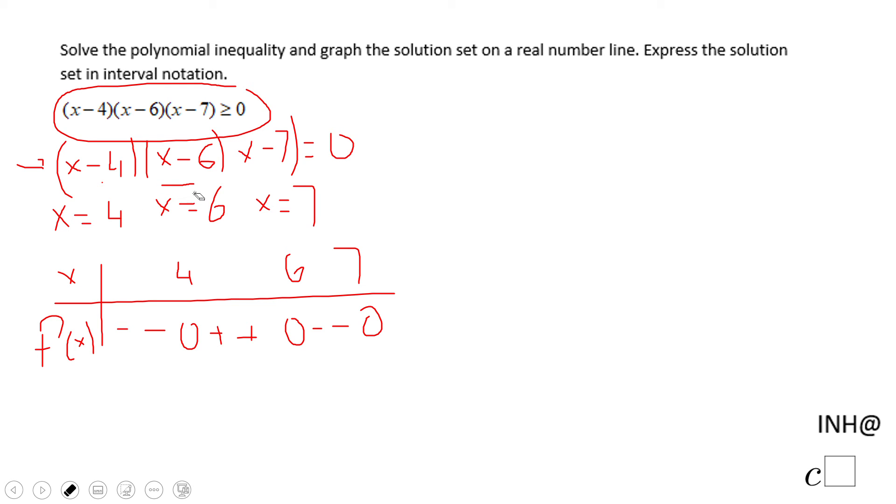Let's see what we get when we have a number greater than 7. We get a positive value here, positive value, and positive value. That tells us it's going to be positive when x is greater than 7.